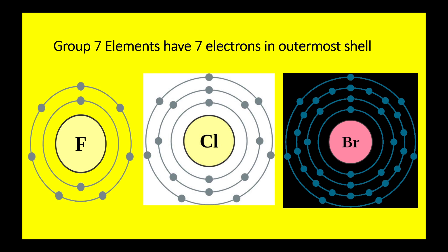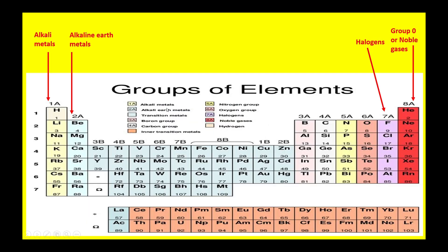In group 7A, all the elements have seven electrons present in their outermost shell. Chlorine, bromine, and iodine have different numbers of total electrons due to different atomic numbers, but they are all placed in group 7A, so they all have seven electrons in their outermost shell.